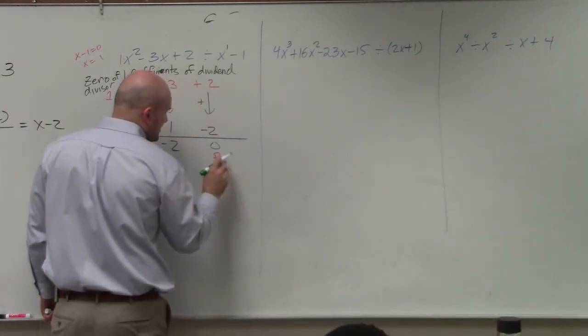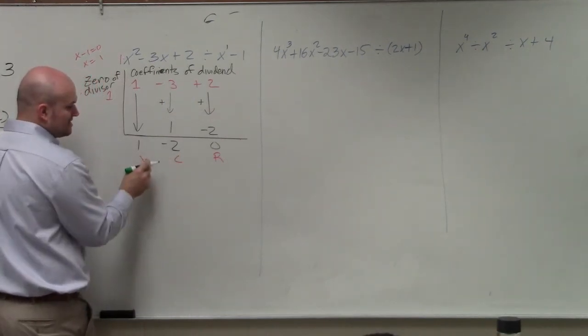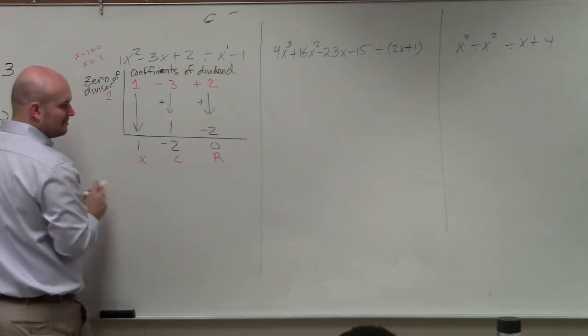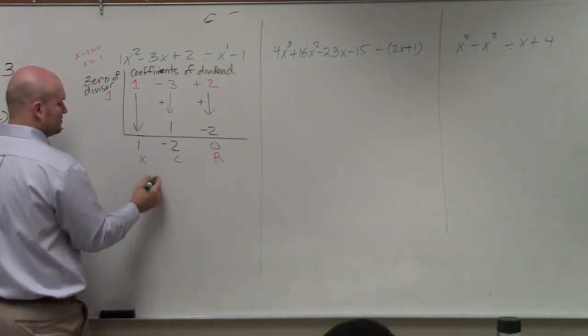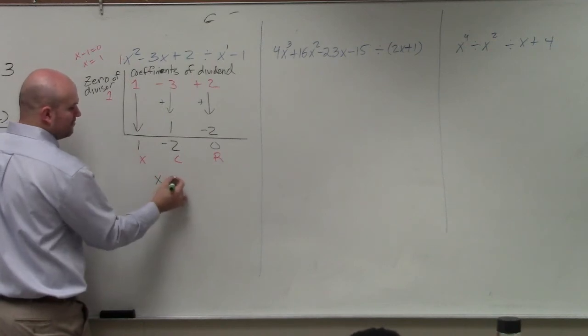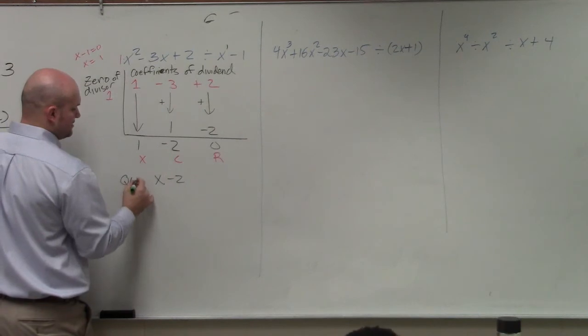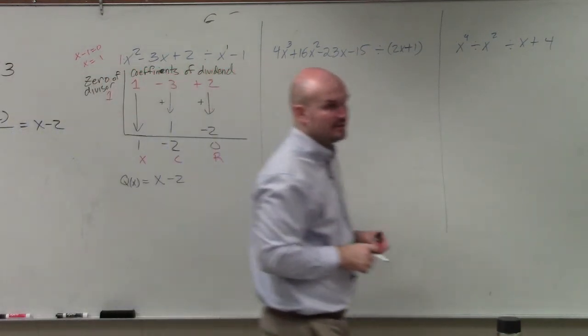Well, this represents our remainder. This represents the constant. And this represents the coefficient of your linear term. So my quotient would be x with the coefficient of 1 minus 2, and then no remainder. So I could say q of x equals x minus 2.